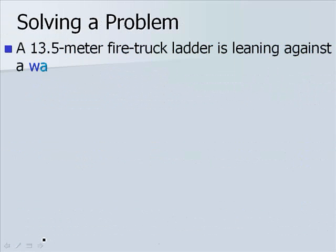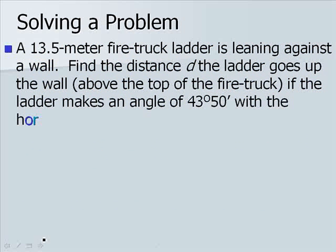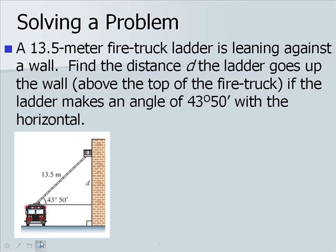A 13.5 meter fire truck ladder is leaning against the wall. Find the distance d, the ladder goes up the wall, above the top of the fire truck. If the ladder makes an angle of 43 degrees 50 minutes with the horizontal. We have the following picture. Notice our angle is labeled, the ladder is labeled, and our side d, the distance that it goes up the wall is labeled as well.